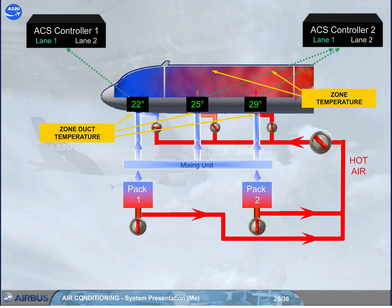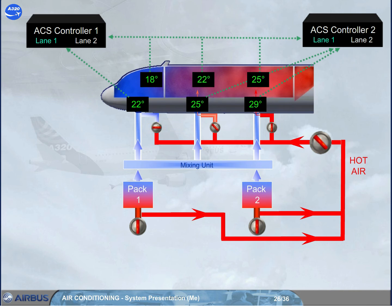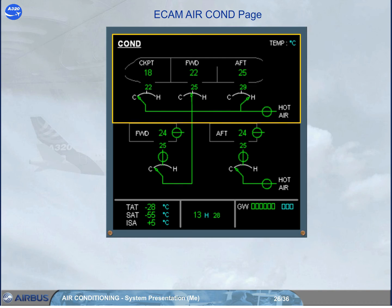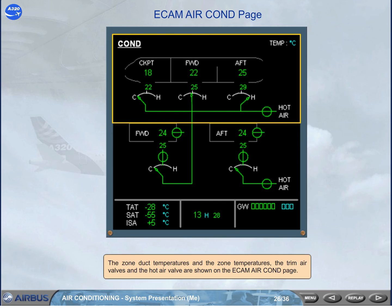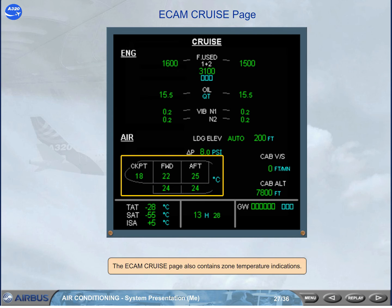The related zone temperature, which is the temperature of the ambient air, is also monitored by both ACS controllers. The zone duct temperatures, the zone temperatures, the trim air valves, and the hot air valve are shown on the ECAM air conditioning page. The ECAM cruise page also contains zone temperature indications.